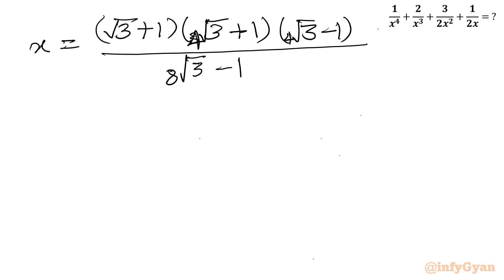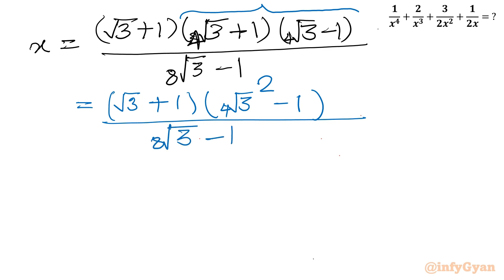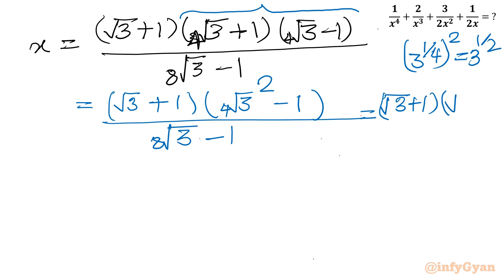Let us apply once again the difference of two squares. So I will be writing (root 3 + 1) times (4th root 3)² − 1 over (8th root 3 − 1). Now (3^(1/4))² becomes 3^(1/2), which is root 3. So in the next step we can write 1 over (8th root 3 − 1), and we now have (root 3 + 1)(root 3 − 1) in the numerator.